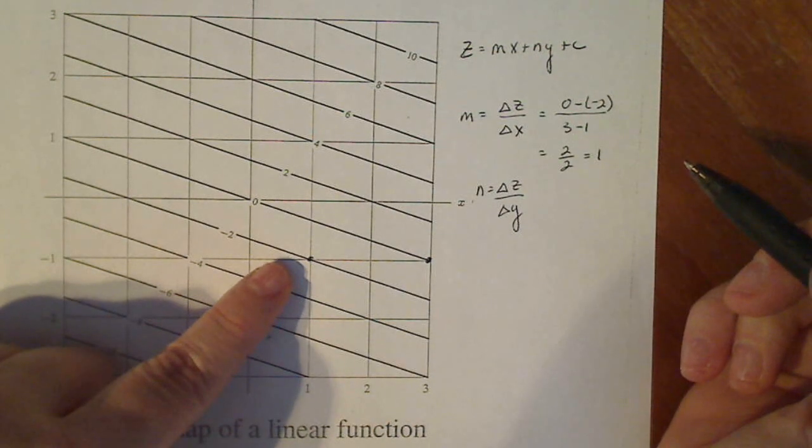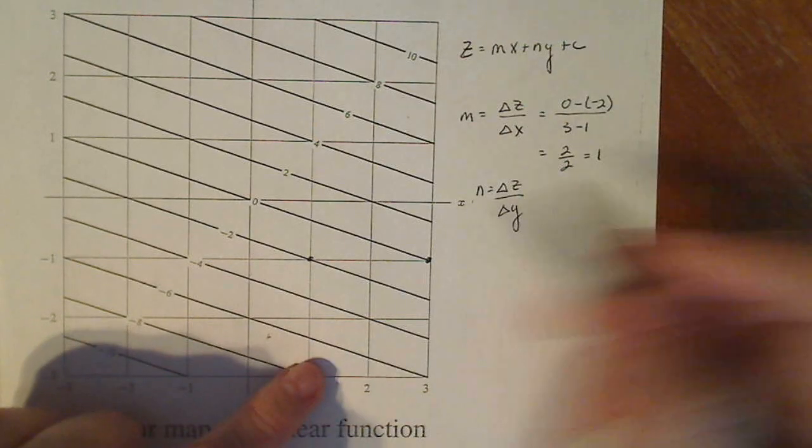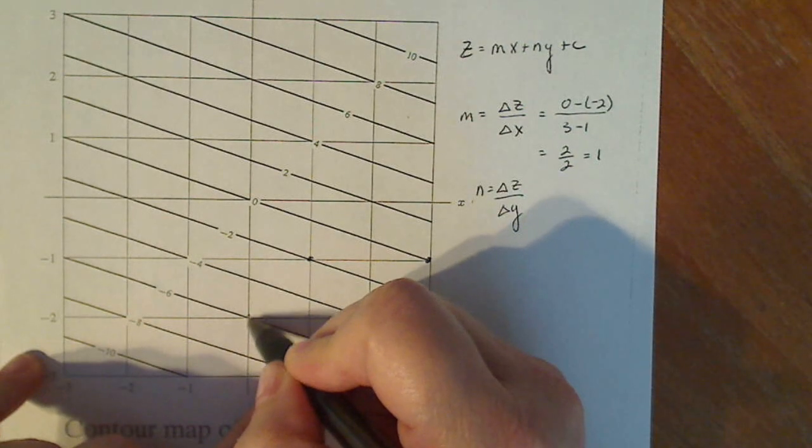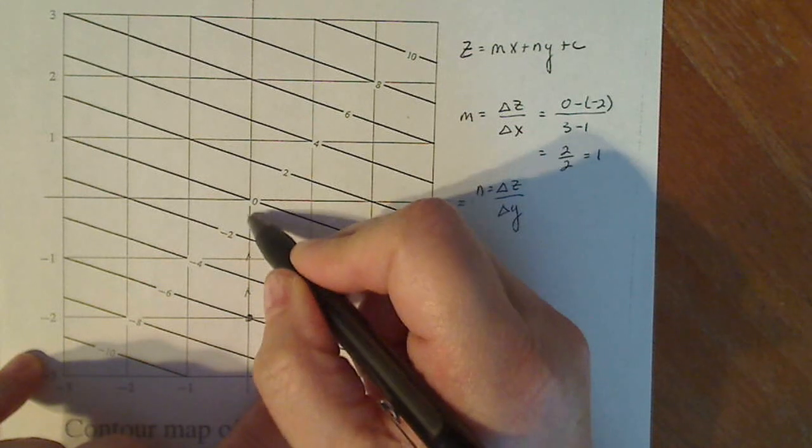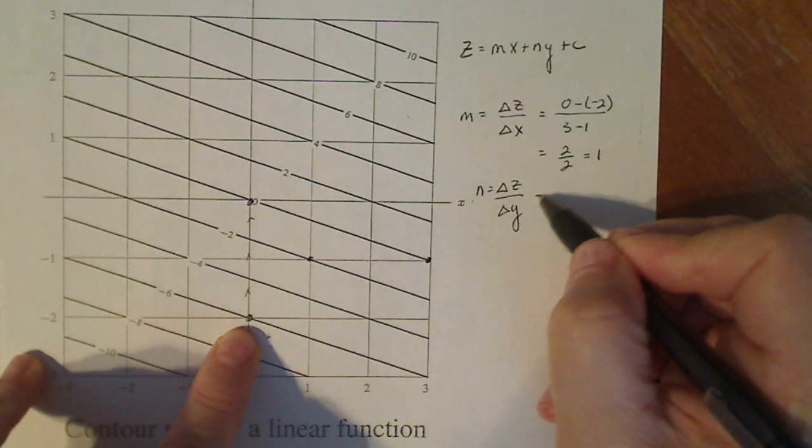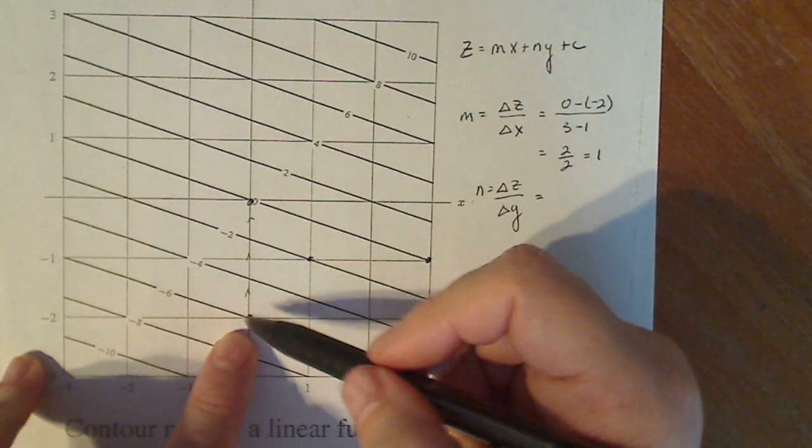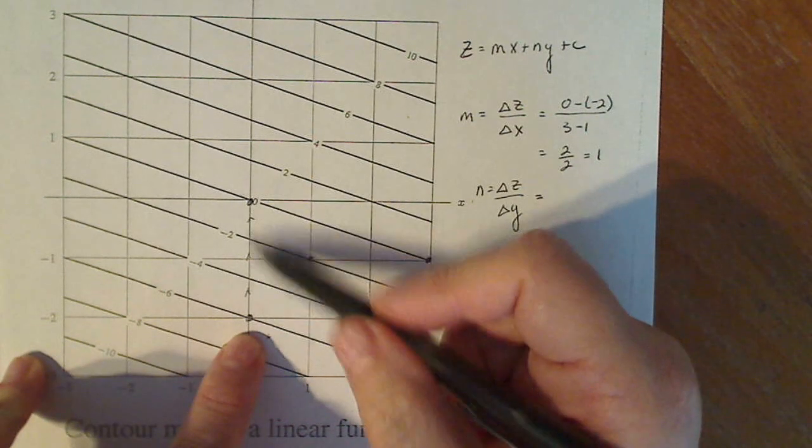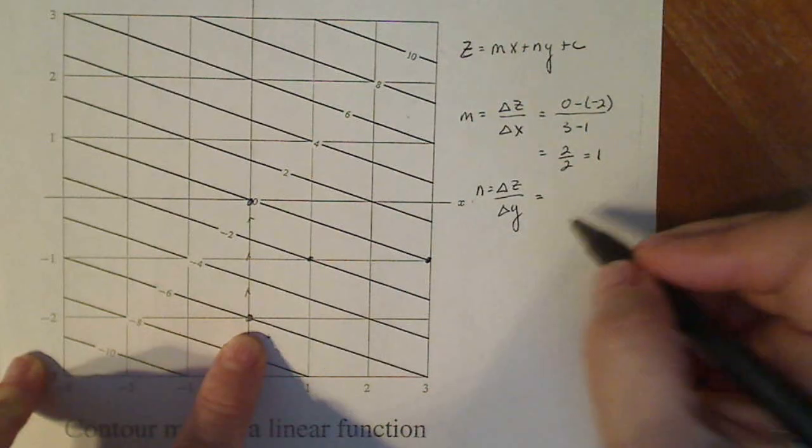Now I'm gonna do the same thing for Y. So I see a corner here and I'm gonna move up this way until I see another corner here. So I say to myself, okay, the change in Y, I go from zero minus negative six.